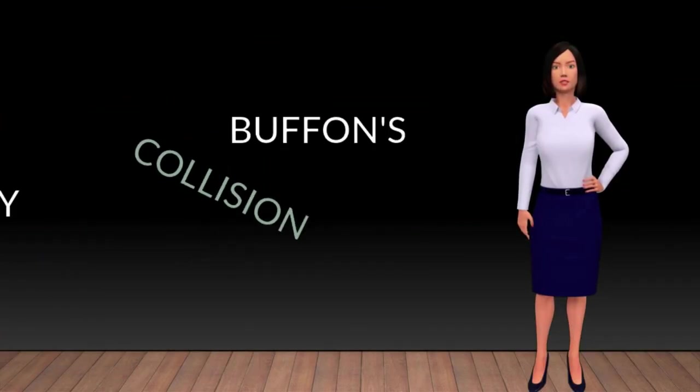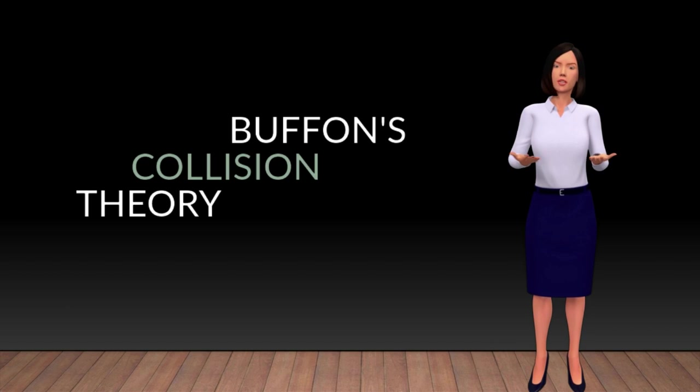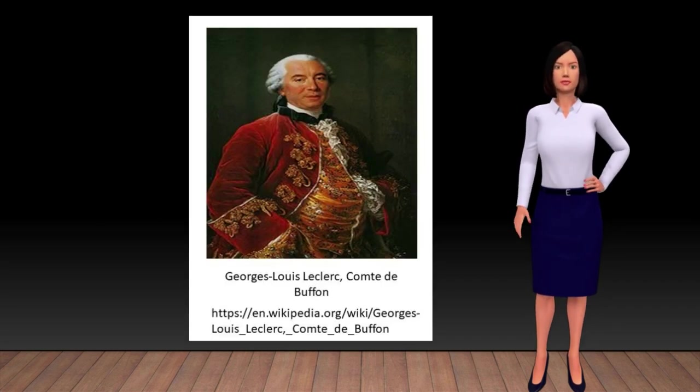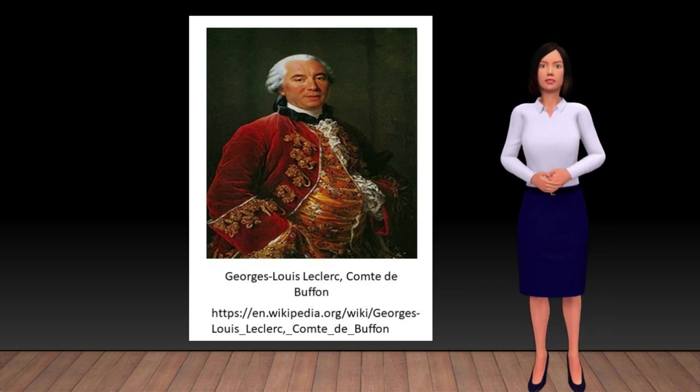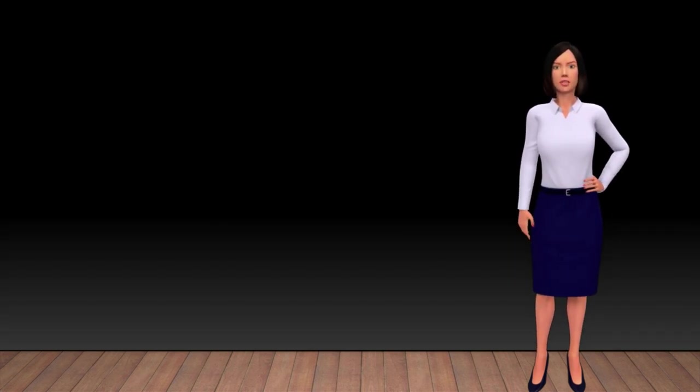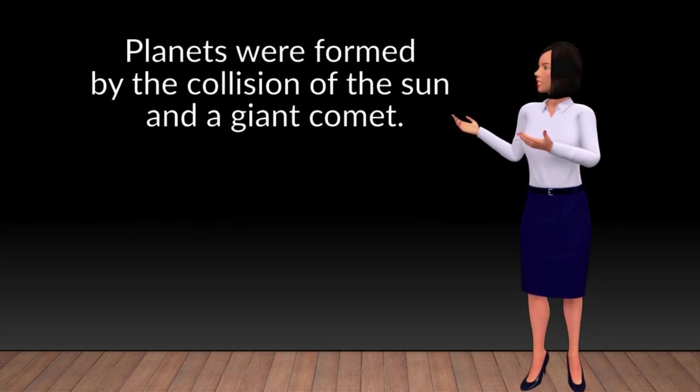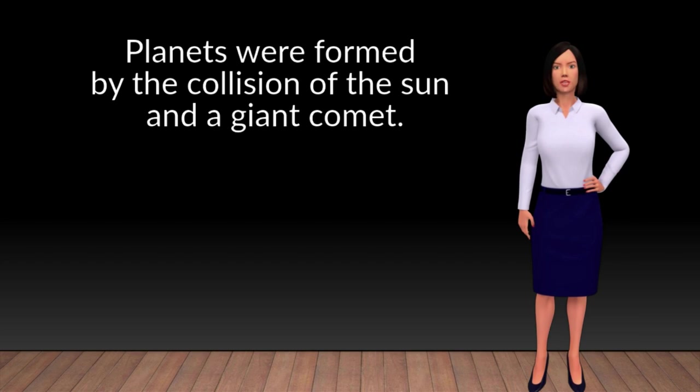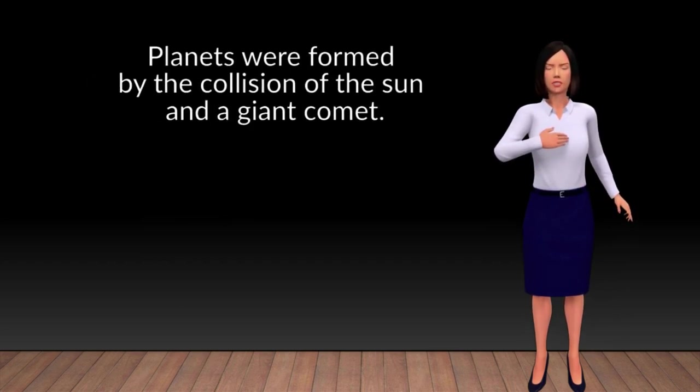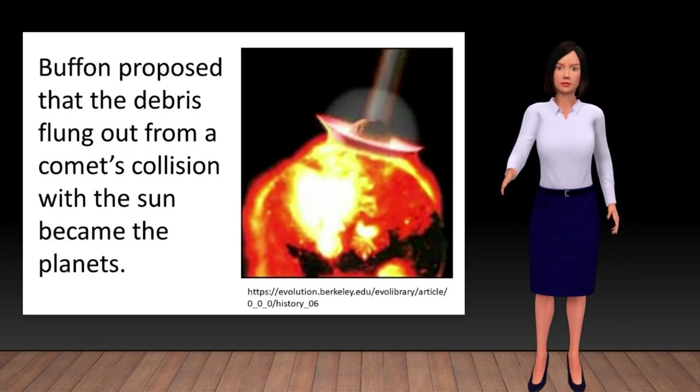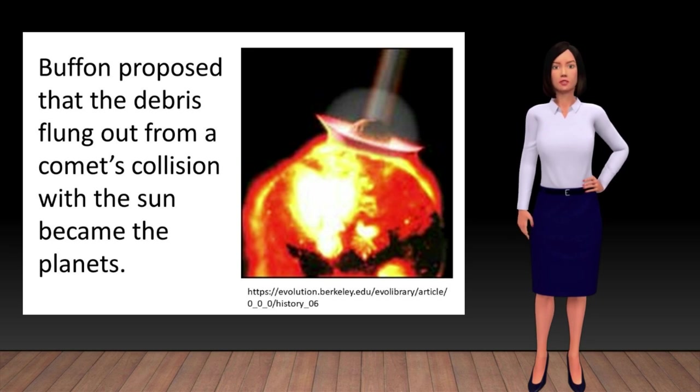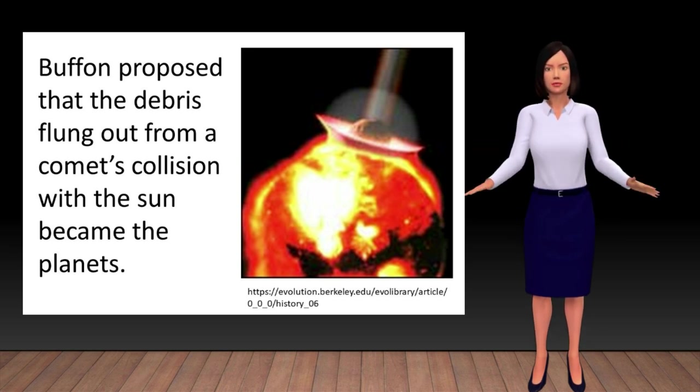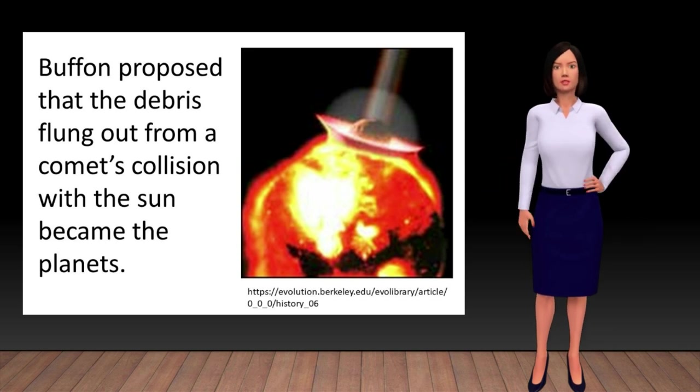Buffon's Collision Theory was proposed in 1749 by French naturalist, mathematician, and cosmologist Georges-Louis Leclerc, Comte de Buffon. According to his theory, planets were formed by the collision of the sun and a giant comet. The resulting debris formed into planets that rotate in the same direction as they revolved around the sun. In the picture, it shows that the giant comet collided with the sun. Buffon proposed that the debris flung out from a comet's collision with the sun became the planets.